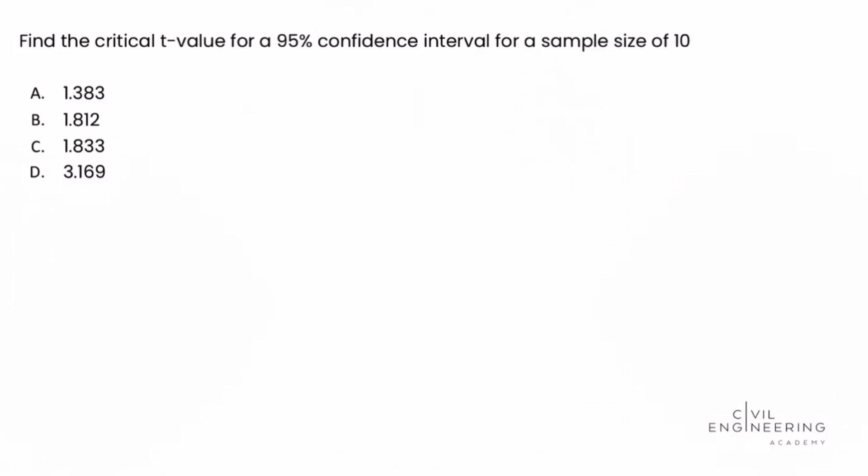Find the critical t-value for a 95% confidence interval for a sample size of 10. So to solve this problem, we're going to use the FE reference handbook, and at the time of this recording, we're using version 10.2 of the FE reference handbook. And specifically in the handbook, we're going to turn to page 77.